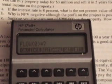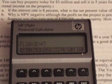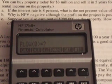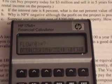Now, down to the meat and potatoes of the problem here. The problem states that you can buy a property today for $3 million and sell it in five years for $4 million, but you'll earn no rental income on the property. If the interest rate is 8%, what is the net present value of the project? So, nice easy one to start off with.